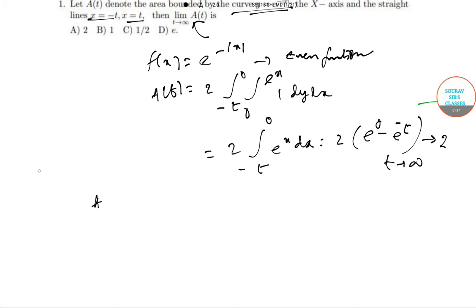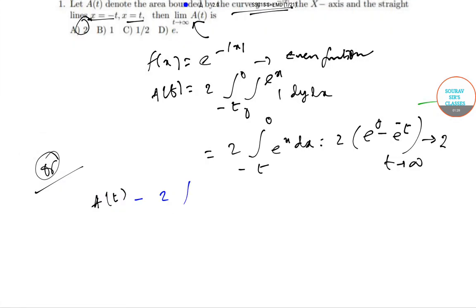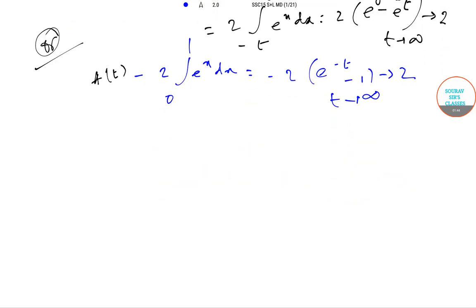The answer is A. The other process, let me use a different color for this, is to directly do 2 times the integral from 0 to t of e^(-x) dx, and then you can put the value that will give you 2 as t tends to infinity. So in both ways we get the answer very easily. Now we go to the next question.